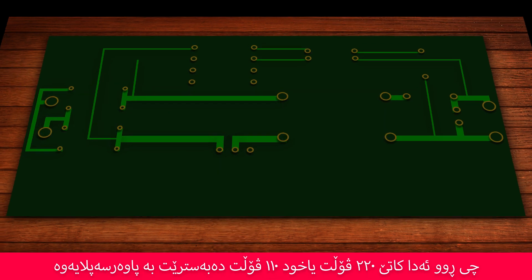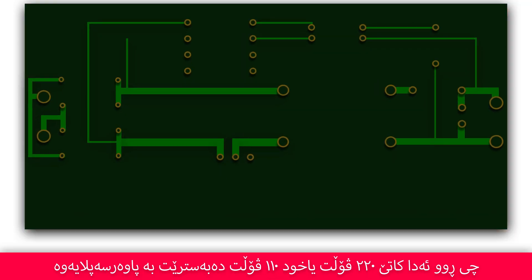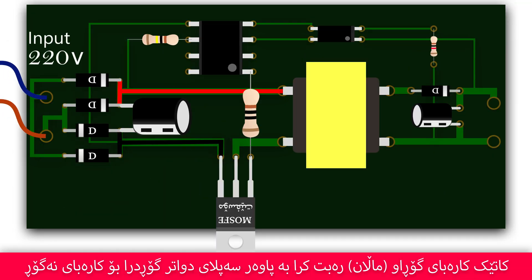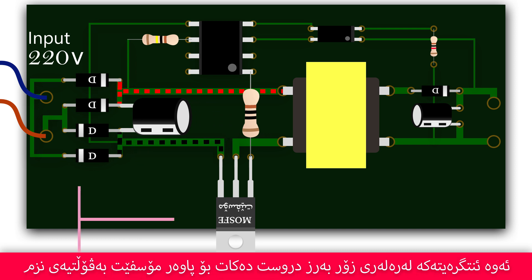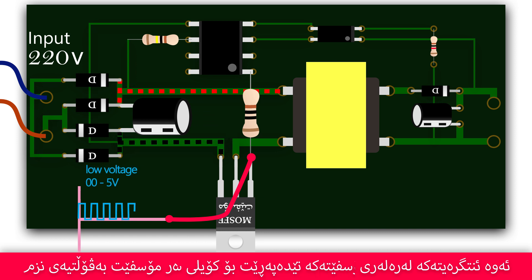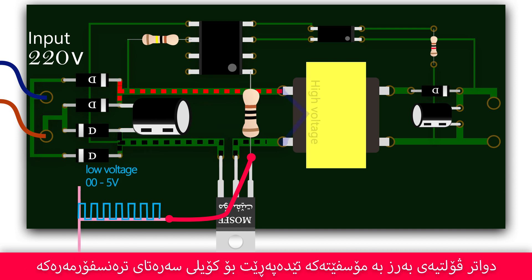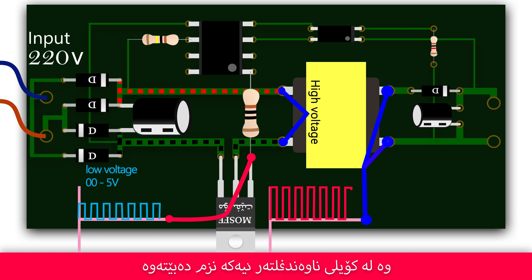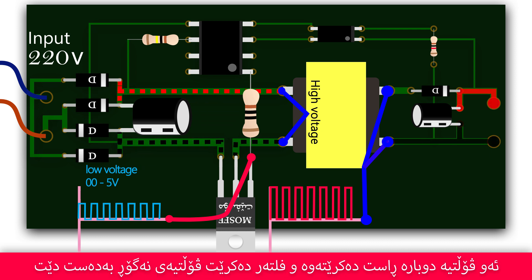When 220 volts or 110 volts AC is connected to the power supply, it is converted to DC. The IC generates an oscillating signal at a high frequency for the MOSFET using a low voltage. Then the high voltage passes through the MOSFET to the primary coil of the transformer. In the secondary coil, the AC voltage is decreased, then rectified and filtered again to give a DC voltage output.